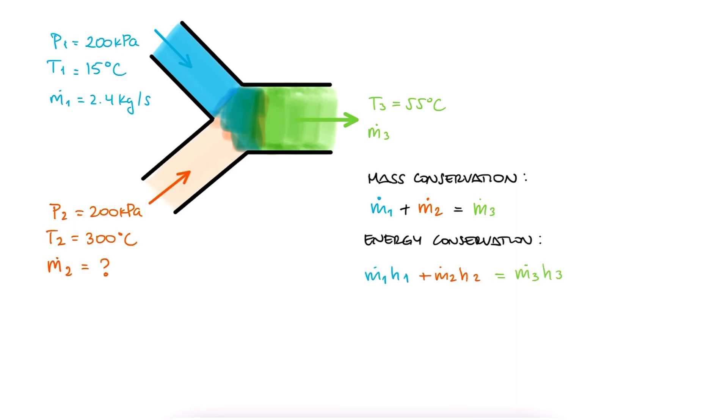Combining the two, meaning substituting M3 in terms of 2 and 1, we get an expression from which we can solve for M2, the question to this problem.